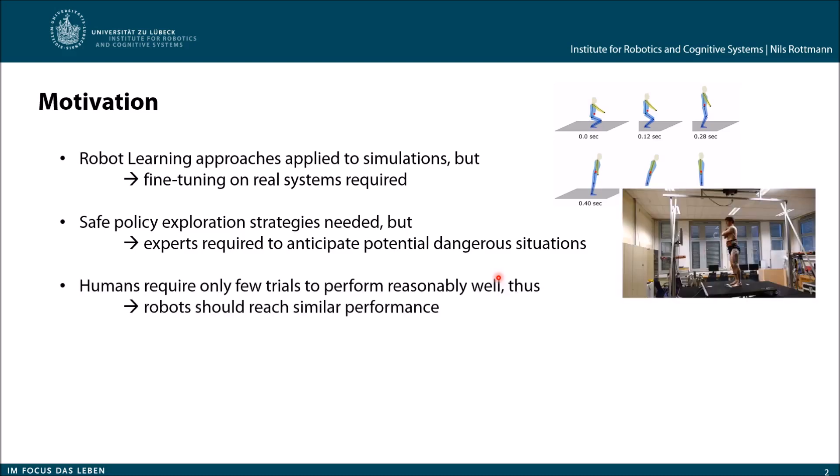And this is what we want to copy from humans. They require only just a few trials, like maybe two or three trials, to perform reasonably well. So, if we tell a human he should learn the stand-up squat, you will learn it like in two or three trials. And we would like that our robot can learn this also in just a few trials.